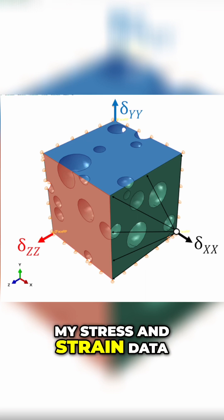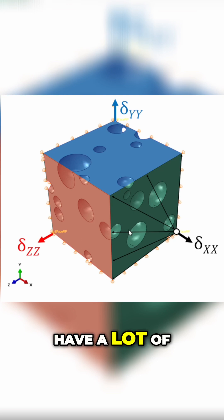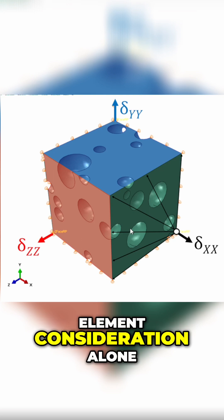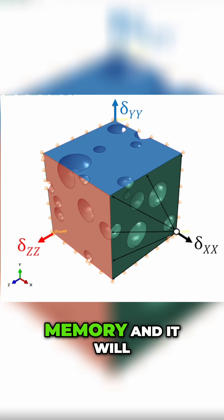This is really important for a system like this because you have a lot of elements in the system. If you're tracking it by element consideration alone, there will be a lot of variables in the system and you'll probably run out of memory.